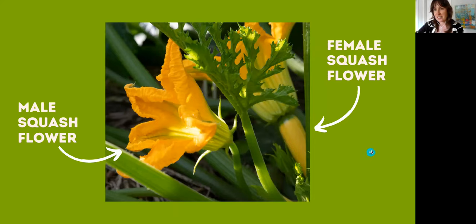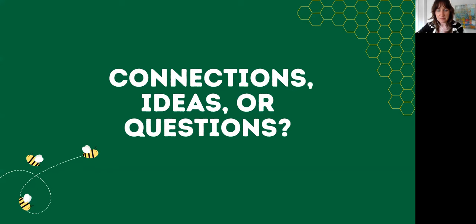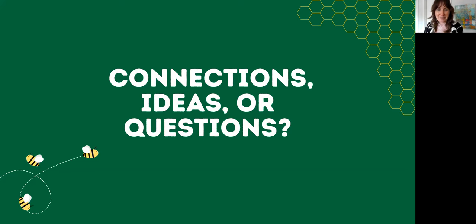It's almost like imagining a sunflower kernel that's really thin and empty inside with no kernel inside of it. Does this bring up any connections, ideas, or questions about the basics of pollination?